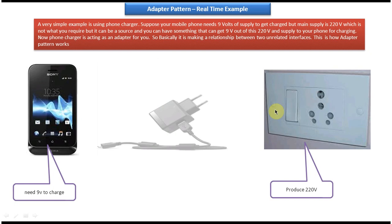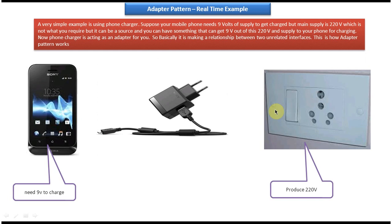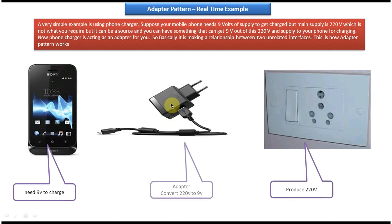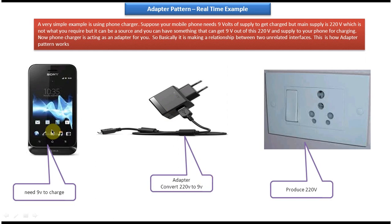The adapter is nothing but a mobile phone charger. What we have to do is connect the mobile phone charger to the electric socket, and the other end of the charger to the mobile phone. What this charger does is convert 220 volts to 9 volts and pass it to the mobile phone so that it can charge properly.